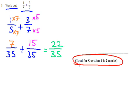So this is a two-mark question. You get one mark for attempting to get them over the same denominator and getting one of those right, and you get one mark for the answer, 22 over 35.